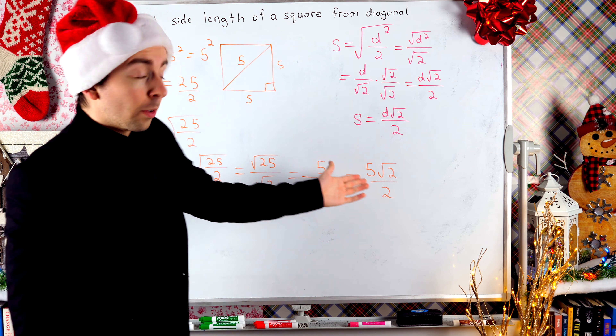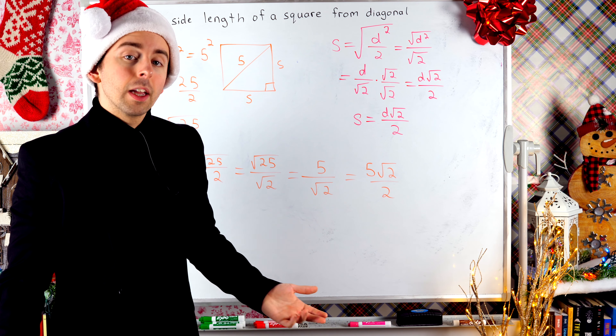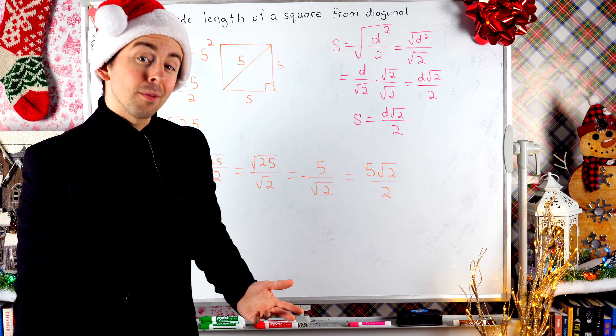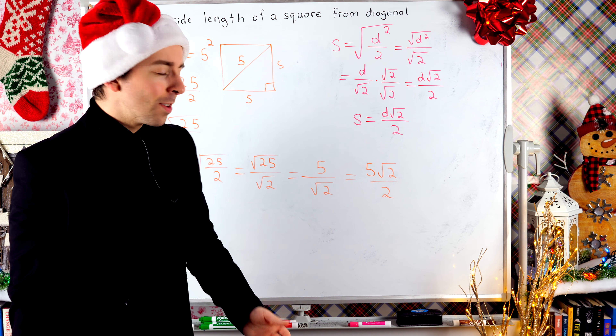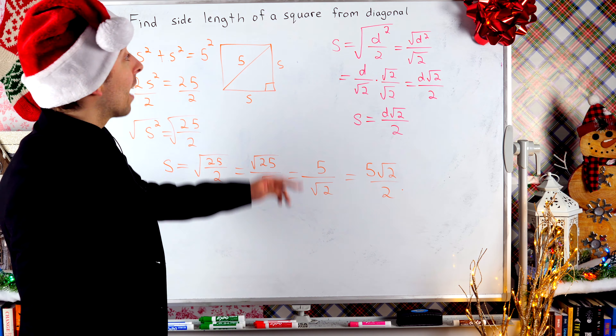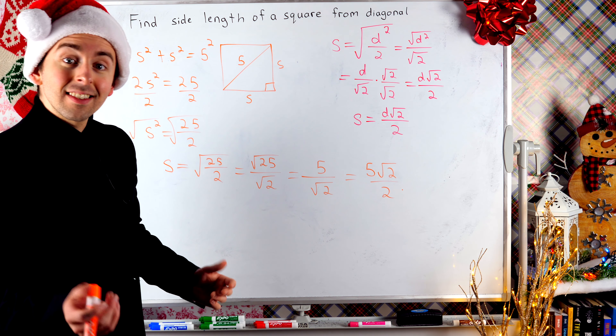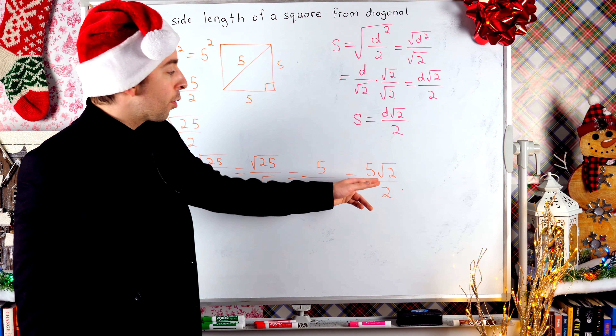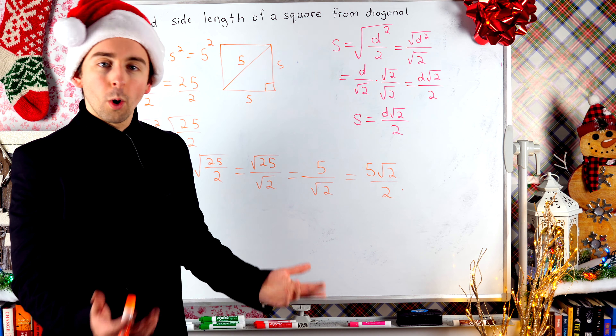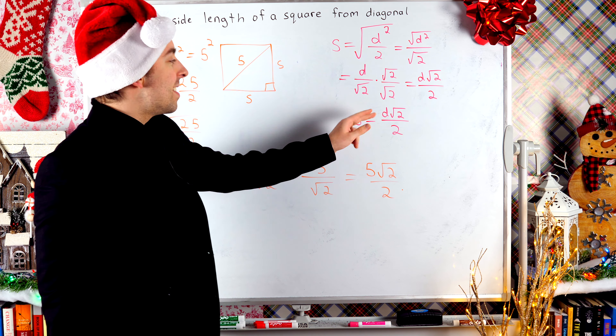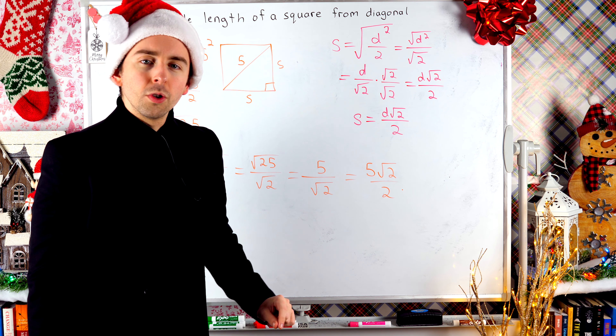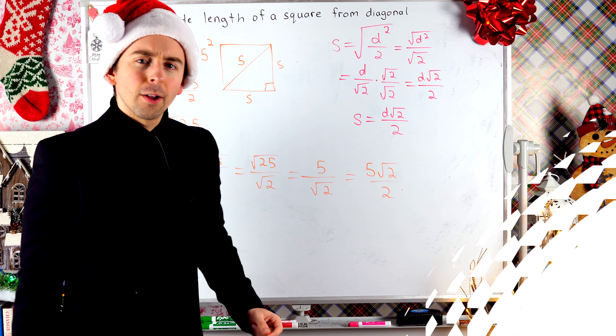You could plug that into a calculator if you wanted a decimal approximation, but I like exact answers, so that's how I'm going to leave it. If a square has diagonal length 5, its side lengths are 5 root 2 over 2. If a square has diagonal length d, its side lengths are d root 2 over 2. Hope that helps.